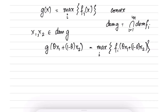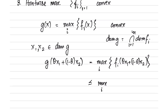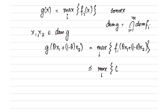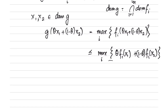Now observe that this is less than or equal to θ f_i(x_1) + (1−θ) f_i(x_2), using the convexity of each f_i. Since each of these inequalities holds, the maximum over all i is also less than or equal to the maximum over all i of the right-hand side, because if each term is smaller, their maximum also satisfies the same inequality.